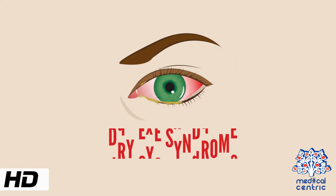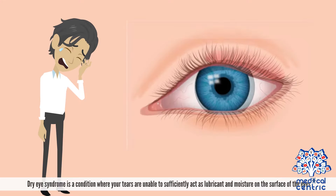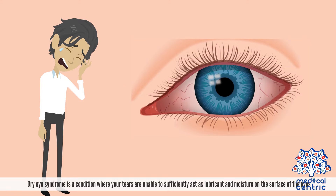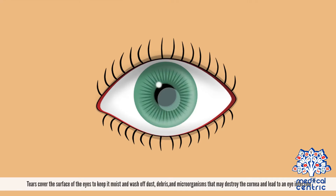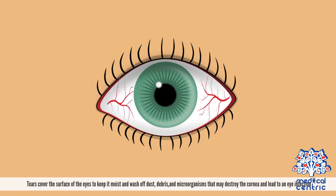Today's topic is dry eye syndrome. Dry eye syndrome is a condition where your tears are unable to sufficiently act as lubricant and moisture on the surface of the eyes. Tears cover the surface of the eyes to keep it moist and wash off dust, debris, and microorganisms that may destroy the cornea and lead to an eye infection.